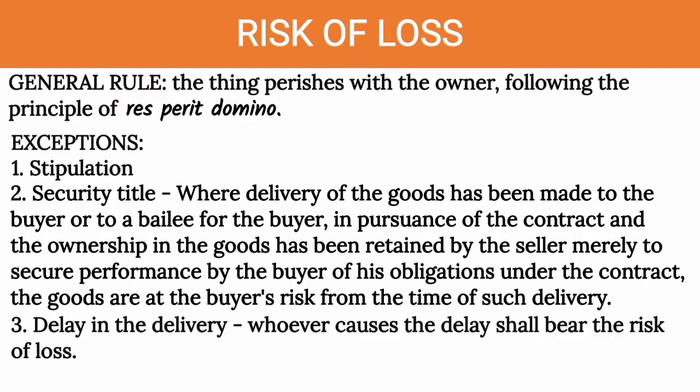Now the concept of risk of loss. We already mentioned this when we compared the contract of sale with the contract of agency to sell. Under the principle of res perit domino — literally translated as 'the thing perishes with the owner' — as a general rule the risk of loss will be with the owner. The act that transfers ownership is tradicio or delivery. That is why, as a general rule, prior to delivery the seller remains to be the owner and he will be liable for the risk of loss. But after delivery, the buyer becomes the owner, and as a general rule the risk of loss will be with the buyer already.